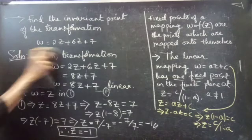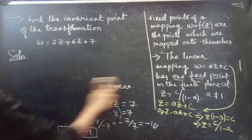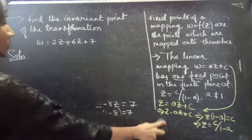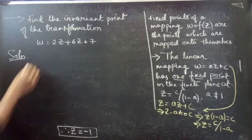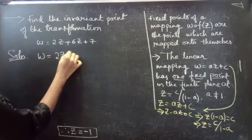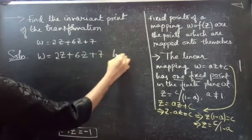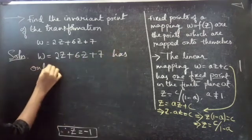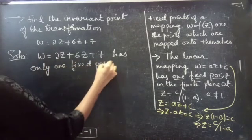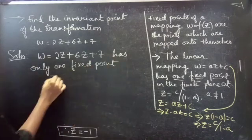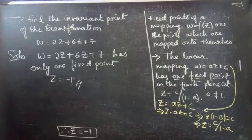Therefore the transformation W equals 8Z plus 7 has only one fixed point, Z equals minus 1. This completes the problem.